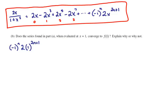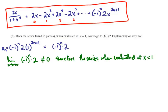And when we do that, we get negative 1 to the n times 2 times 1 to the 2n plus 1. And so our term is, the nth term is negative 1 to the n times 2. And when we try the nth term test, as n goes to infinity, we do not get 0. And therefore, the series, when evaluated at x equals 1, does not converge to f of 1.